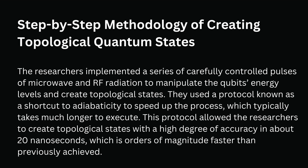The researchers implemented a series of carefully controlled pulses of microwave and RF radiation to manipulate the qubits' energy levels and create topological states. They used a protocol known as a shortcut to adiabaticity to speed up the process, which typically takes much longer to execute. This protocol allowed the researchers to create topological states with a high degree of accuracy in about 20 nanoseconds, which is orders of magnitude faster than previously achieved.